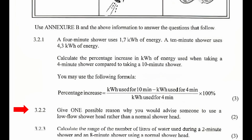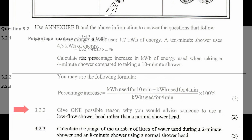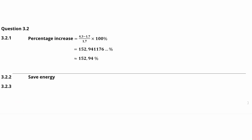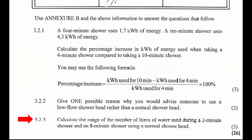Question 3.2.2: Give one possible reason why you would advise someone to use a low flow shower head rather than a normal shower head. One possible reason could be to save energy. Other answers that are also considered correct are: to save water, or to save money.